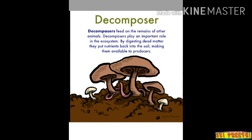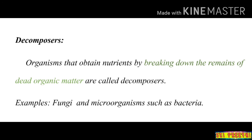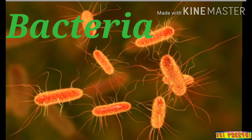Decomposers feed on the remains of other organisms and play a very important role in the ecosystem. By digesting dead matter, they put nutrients back into the soil, making them available to producers. Organisms that obtain nutrients by breaking down the remains of dead organic matter are called decomposers. Fungi and microorganisms such as bacteria are examples of decomposers. In this class we discussed the different feeding habits of animals: herbivores eat only plants, carnivores eat only flesh, omnivores eat both, scavengers eat dead and decaying matter, and decomposers obtain nutrients by breaking down dead organic matter.